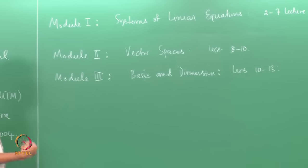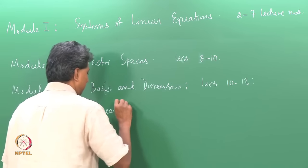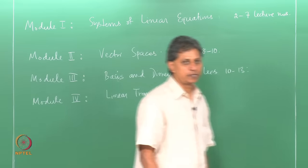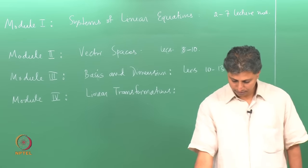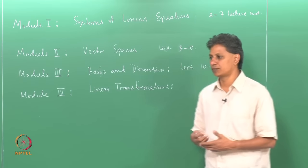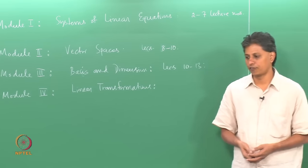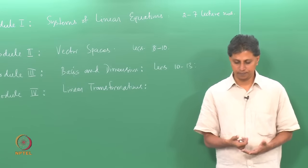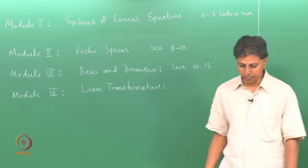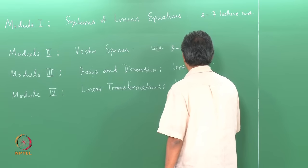Module 4 is perhaps the most important module — linear transformations, which are absolutely fundamental in perhaps the whole of mathematics, covered in lectures 14 to 18. We will discuss the definition of a linear transformation, examples, and two important subspaces associated with a linear transformation: the null space and the range space. We will prove the rank-nullity dimension theorem and discuss the row rank and column rank of a matrix and their equality.